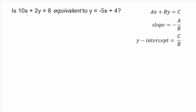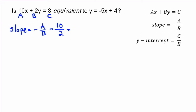What if they ask you if two linear equations are equivalent — are they the same? You can use the shortcut again. Here a is 10, b is 2, and c is 8. We check if the slope matches: take a over b and change the sign — 10 over 2 is 5, so the slope is negative 5. You can see right there that yes, that's the same. So far so good.